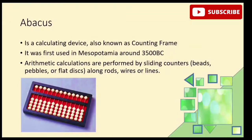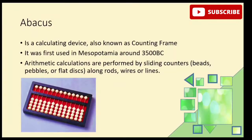The development of computer systems starts with the abacus device. The abacus is a calculating device used to count, using a frame. It was first used in Mesopotamia around 3500 BC, making it approximately 5,500 years old. The modern abacus was developed in China around the 15th century, and is used for arithmetic calculations using counters that slide on rods, as you can see in the image.